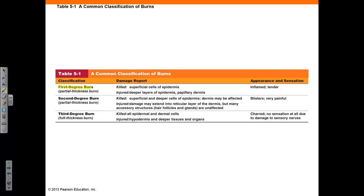In a first degree burn, superficial cells of the epidermis are killed. Injury can also occur to the deeper layers of epidermis, such as the papillary dermis. The appearance will be inflamed and the burn will feel tender. In a second degree burn, superficial and deeper cells of the epidermis and/or dermis may be affected. The damage may extend into the reticular dermis, but many accessory structures are unaffected. The appearance includes blisters and sensations are very painful.